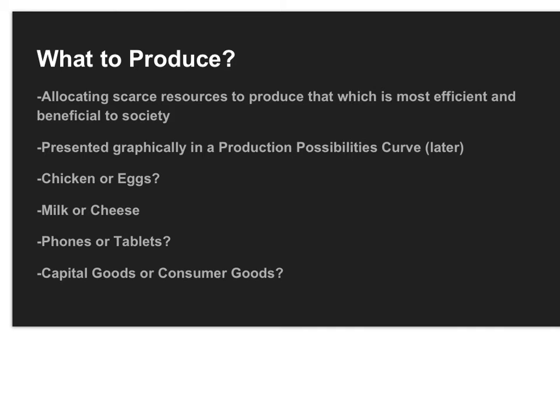So when deciding what to produce, society has to figure out what scarce resources are going to be used in the production of what. It's on that big trade-off of do we want what to produce to be more efficient or more equitable. This is presented graphically in a production possibility curve or production possibility frontier, which you'll learn about a little bit later.